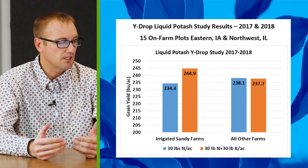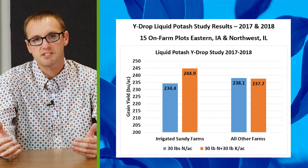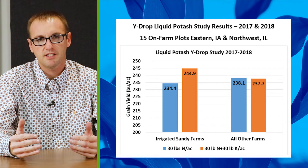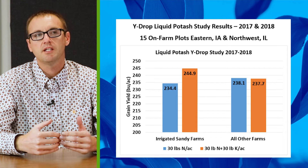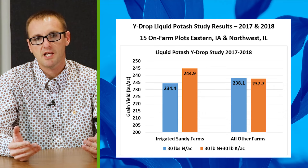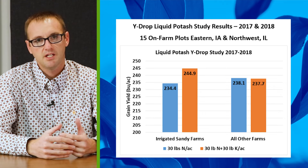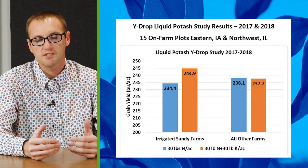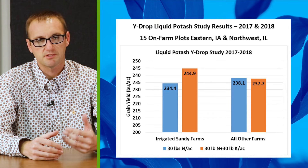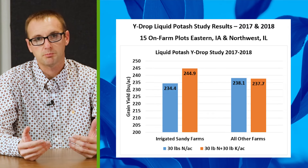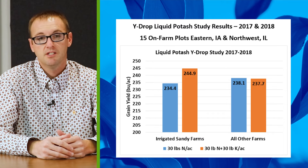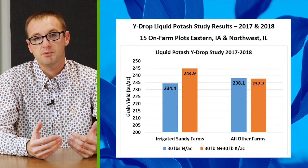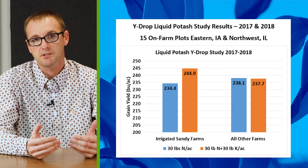On average across all sites, there was roughly 95 pounds of potassium applied either in the fall or spring, so pre-plant potassium was applied at all sites. Unequivocally, in sandier soils there was a yield increase to adding more potassium — in this case 30 pounds. The yield increase was roughly about 10 bushels per acre on average. So if you farm sandy soils, particularly if you know they leach K, this would be a very good option to make sure you're maximizing bushels.